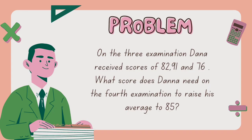The first problem is: on three examinations, Dana receives scores of 82, 91, and 76. What score does Dana need on the fourth examination to raise his average to 85? To find that score, we can use the following steps.